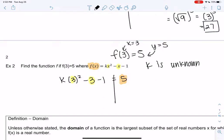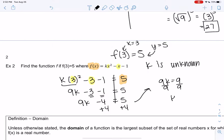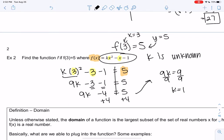So let's simplify. I get 9k minus 3 minus 1 is 5. Or 9k minus 4 is 5. So let's add 4. So 9k is 9. So k is 1. And so our function would be this function where k equals 1. So it would just be x squared minus x minus 1. And in this case, f of 3 is 5. So we'll do domain in the next video.